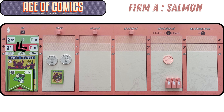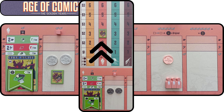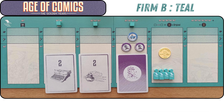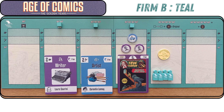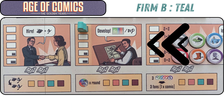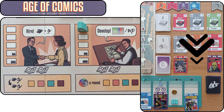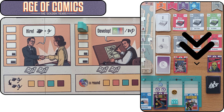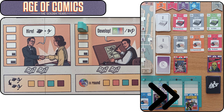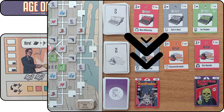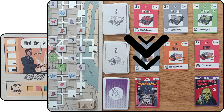Firm A collects the bonus of four dollars and places their newly printed mini comic book on the fan track with three fans — due to having a specialized sci-fi writer, one fan for publishing a sci-fi comic, and one fan for gaining the mastery token for being the first to print a sci-fi comic. Firm B — Teal — has a value two horror writer and value two superhero artist, and develops an original comic book by placing their editor meeple on the action, selecting a superhero comic from the corresponding deck and placing it in their hand. Firm A then also develops, selecting an original romance comic and placing it in their hand.